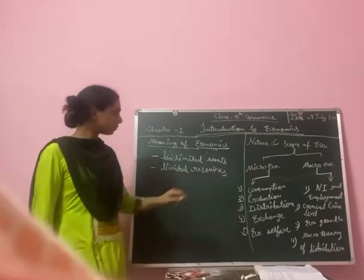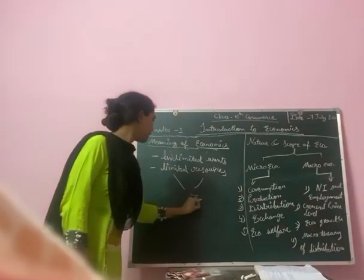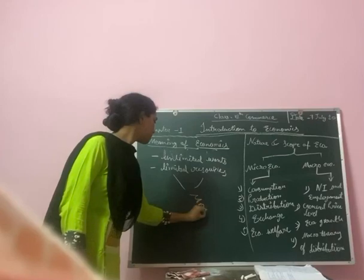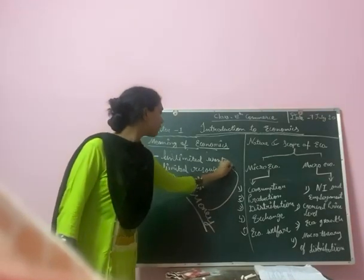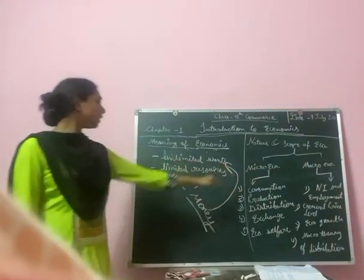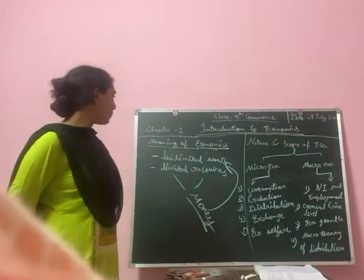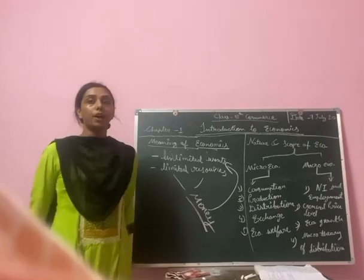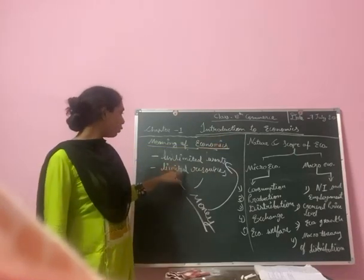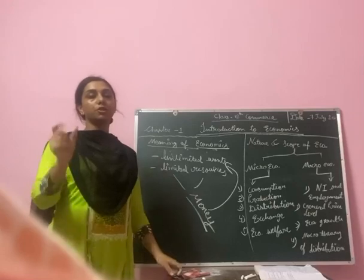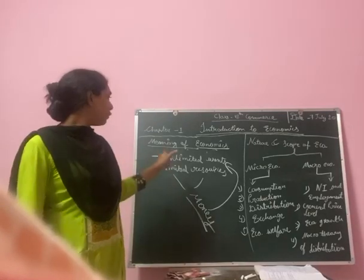Resources, however, are limited. Resources are basically money, and money has a direct relation to unlimited wants. Now our wants are unlimited, but resources are limited. So, how does economics maintain and stabilize the relationship between both these — unlimited wants and limited resources? That is what we seek to understand.